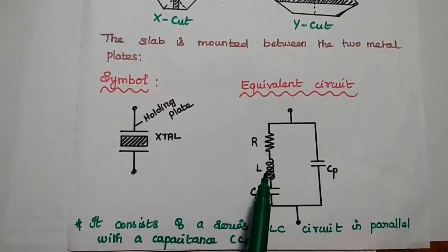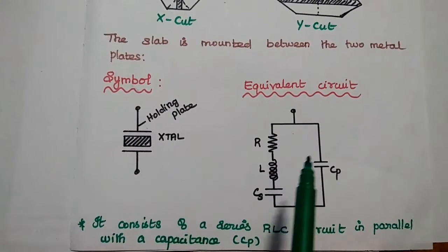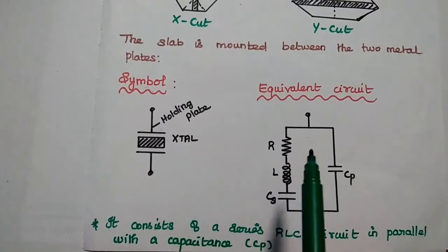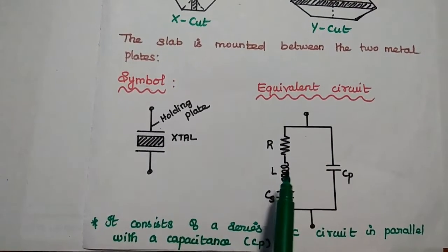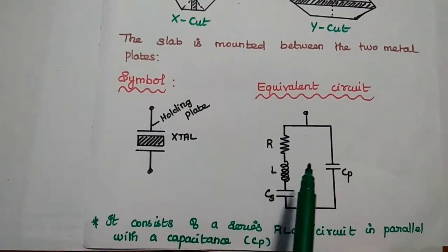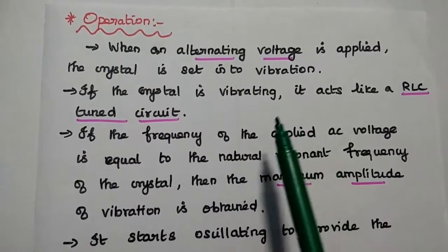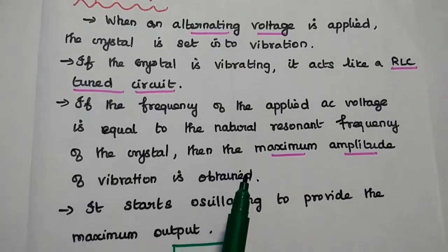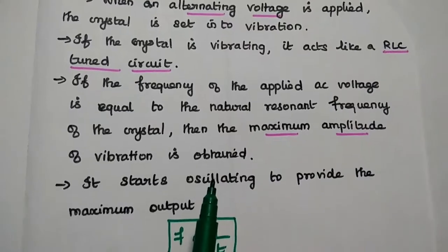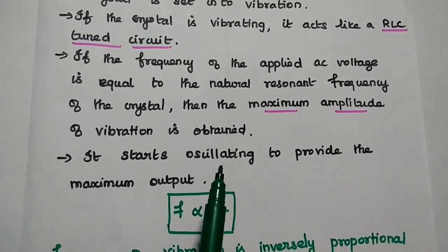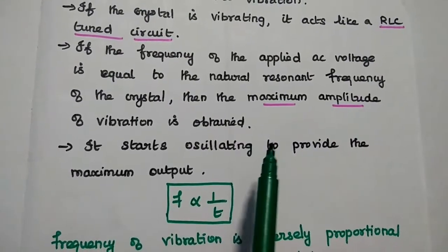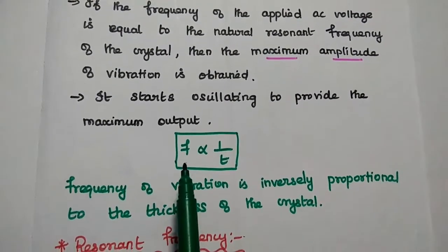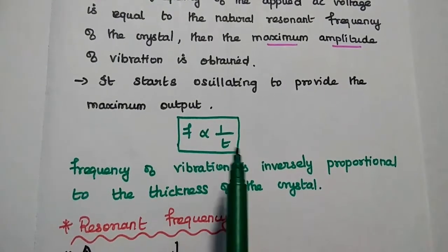Whenever an alternating voltage is applied, the crystal starts oscillating. If the frequency of the applied AC voltage is equal to the resonant frequency of the crystal, the maximum output is produced. The crystal starts vibrating and acts like an RLC tuned circuit. Frequency is inversely proportional to the thickness of the crystal — if the thickness is very high, then the frequency is very low.